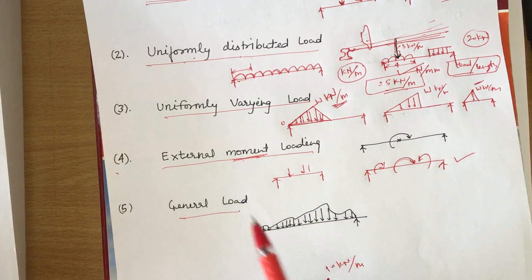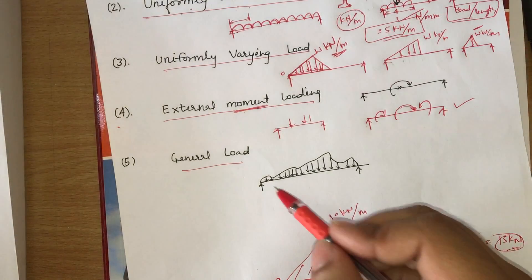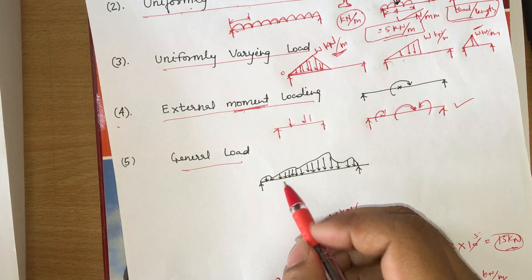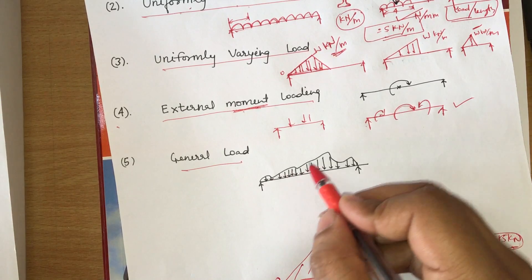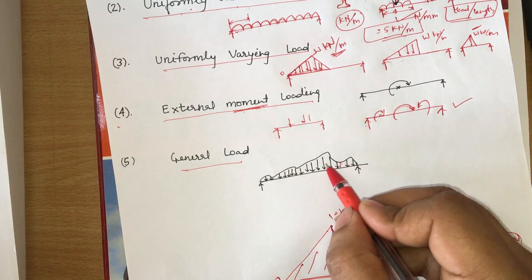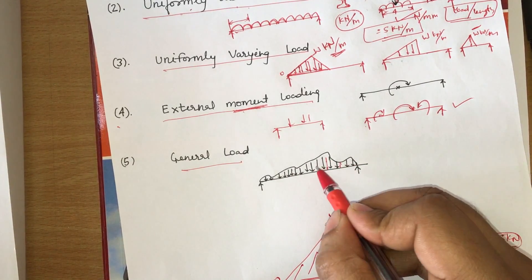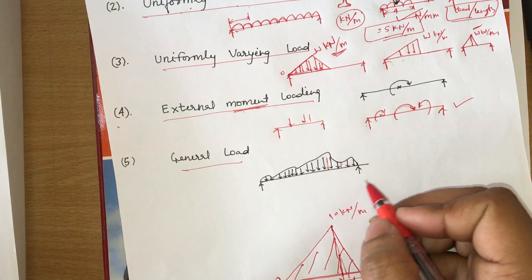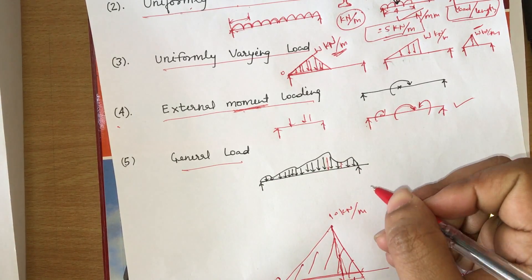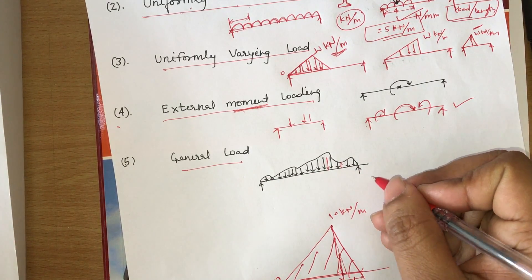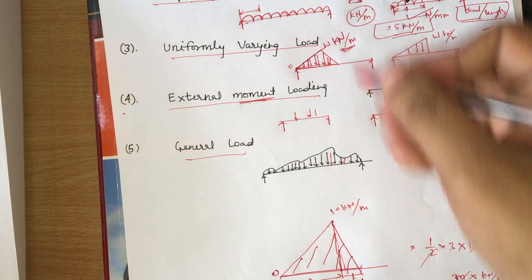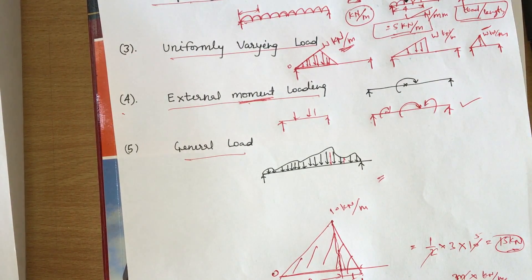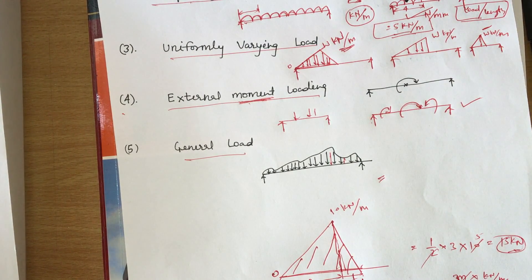General load is a loading type with no standard pattern — it is an irregular loading, as shown in figures with an irregular pattern. So this is the general loading. I think the types of loading are now clear. Thanks for watching the video.